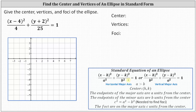In both cases, a is greater than b, and therefore a squared is the larger denominator. If the larger denominator is under the x part, we have a horizontal major axis. If the larger denominator is under the y part, we have a vertical major axis. In either case, h comma k is the center.